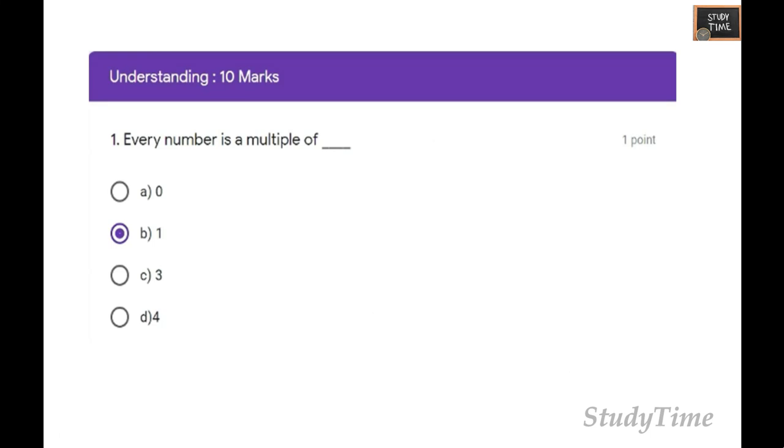It's the first question here. The mark is given on the side. First question: every number is a multiple of? Four options are given: zero, one, three, four. The answer is one, because when any number is multiplied with one, you will be getting that number.